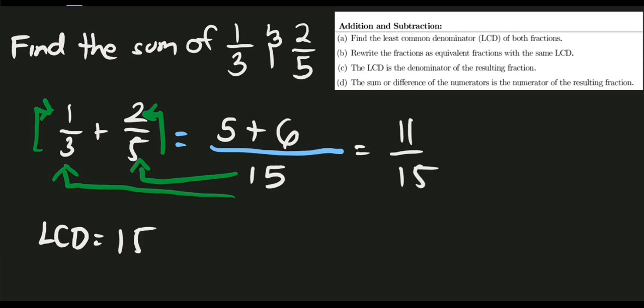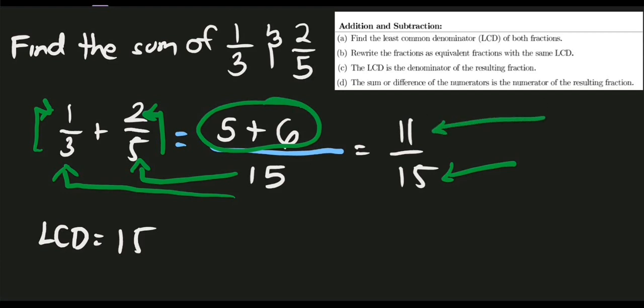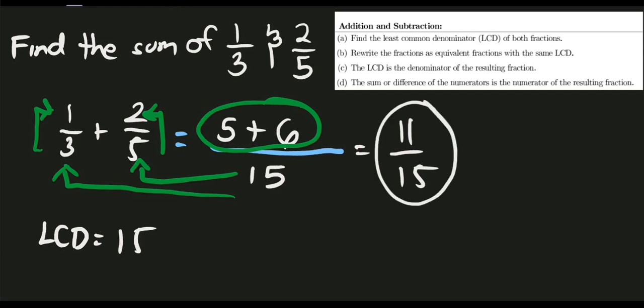As you can observe, the LCD of our given problem serves as our denominator, which is 15. And for step four, the sum of the numerators is the numerator of the resulting fraction — we add 5 and 6 to get 11. So the answer for this given problem is 11 over 15.